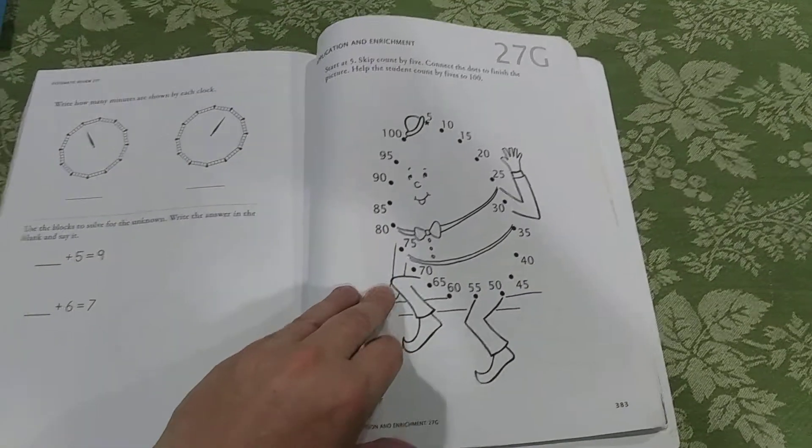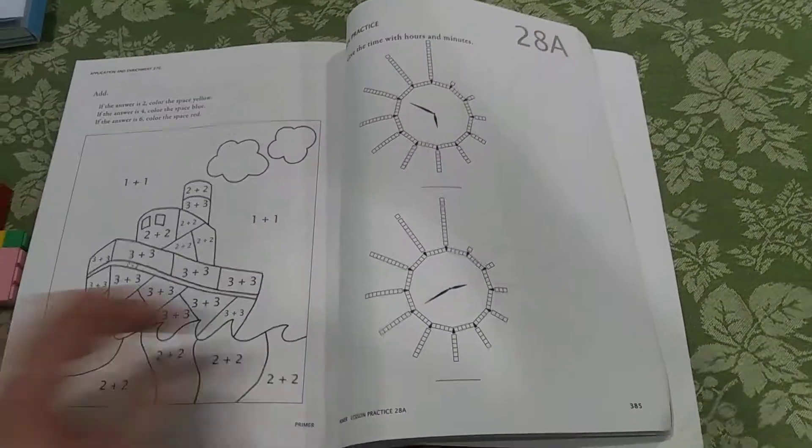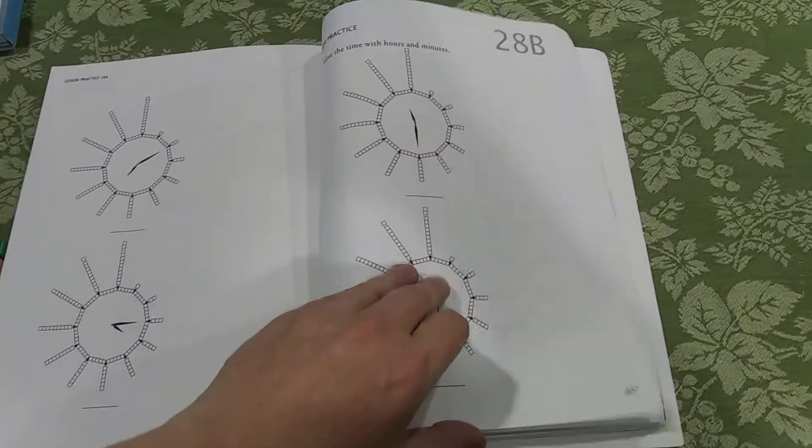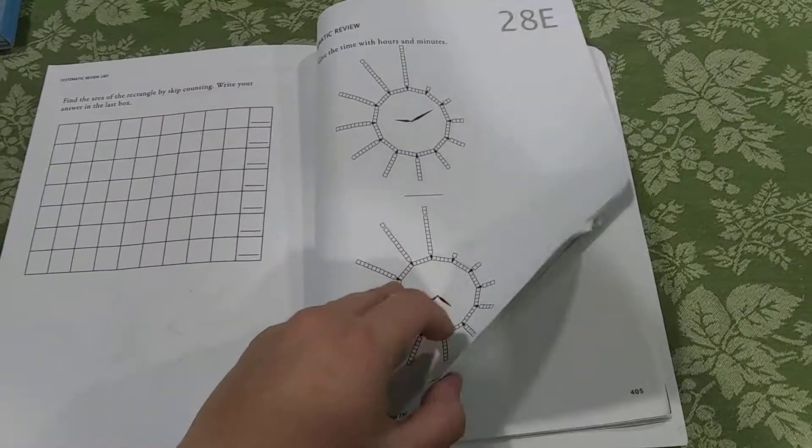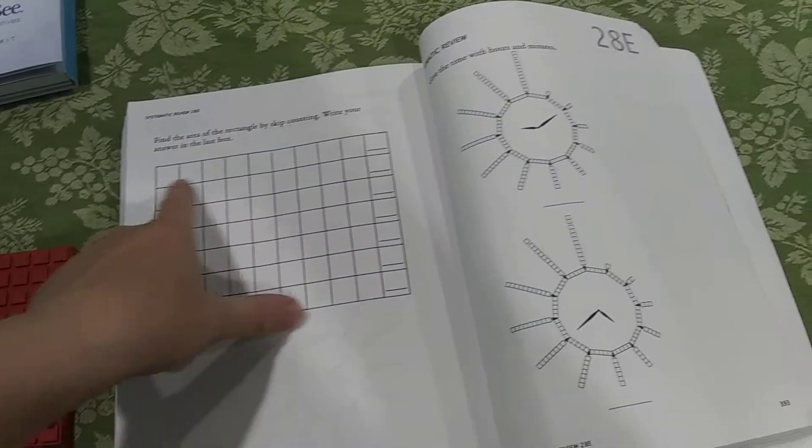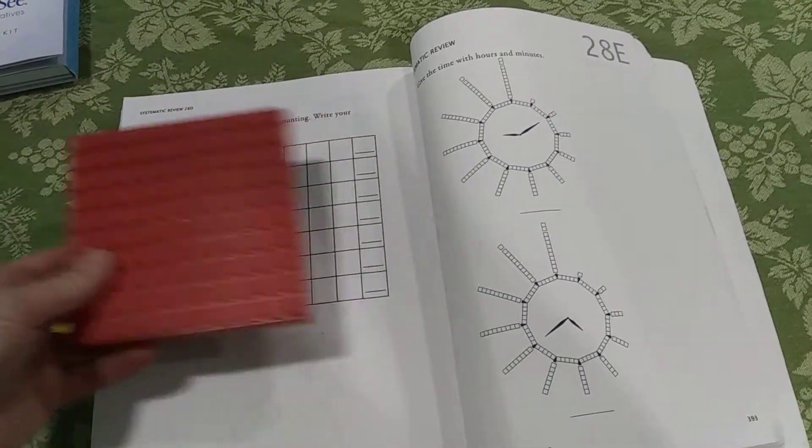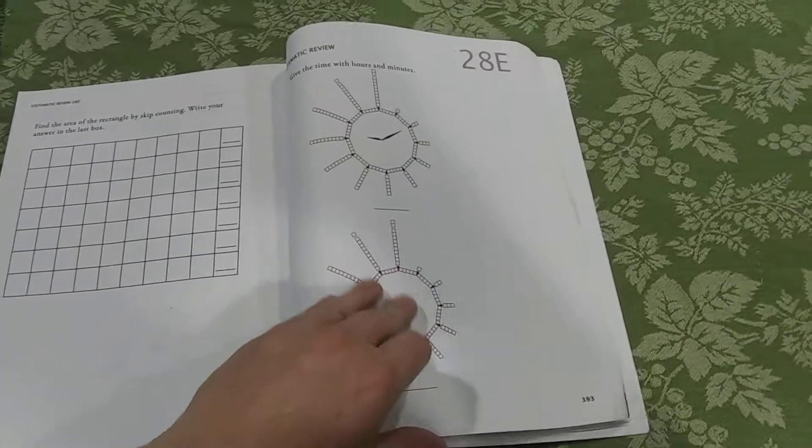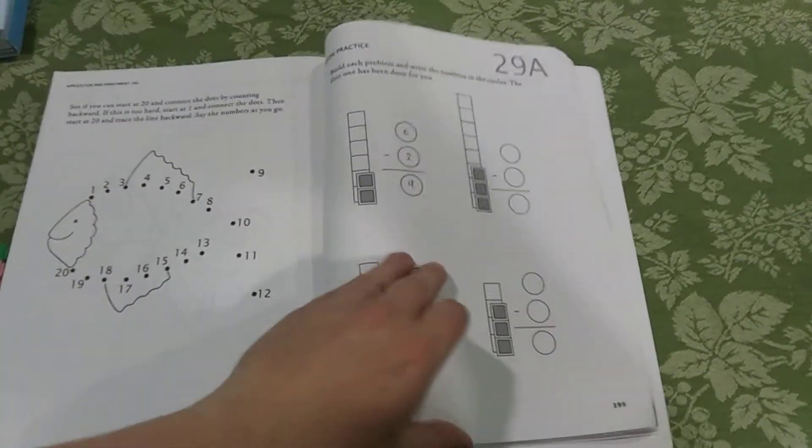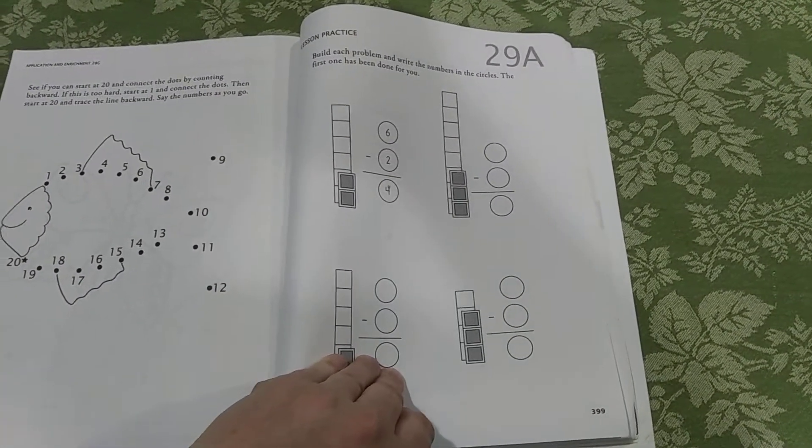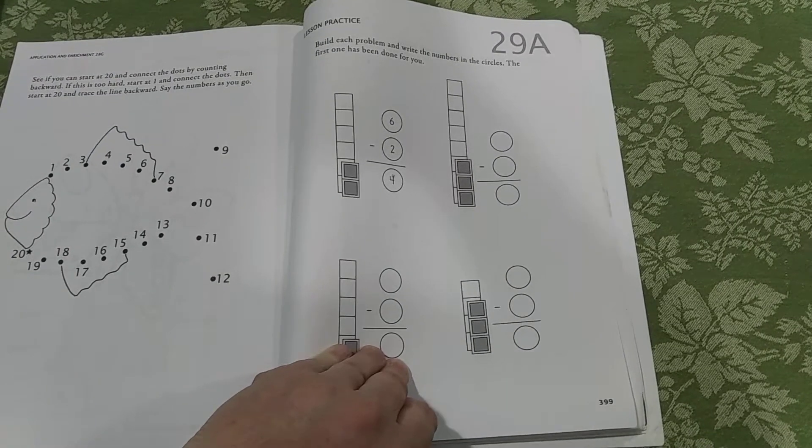The G page is always a fun page. It's not necessary, but my kids really look forward to it. Here they're going to learn how to skip count by tens, so this would be the hundreds block is what that's representing.